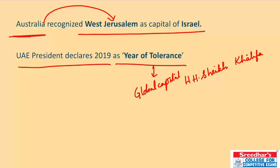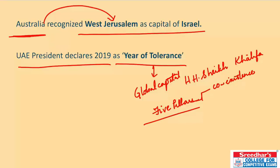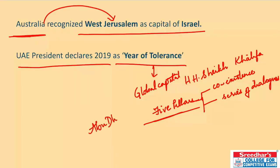The Year of Tolerance will focus on five pillars: the first aims at values of tolerance and co-existence of cultures; the second pillar focuses on the global capital for tolerance via dialogues between countries, cultures, and civilizations. The capital of UAE is Abu Dhabi. Nevada has become the first state in the United States with an overall female majority in its legislature.